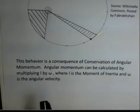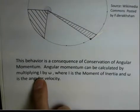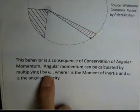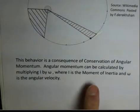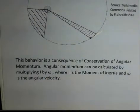This fact that the planet speeds up near the sun is a consequence of the physics principle conservation of angular momentum. The angular momentum is calculated with I times omega, where I is moment of inertia and omega is the angular velocity.